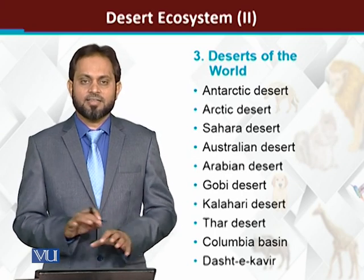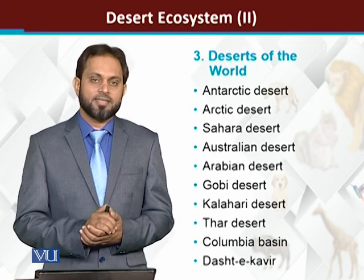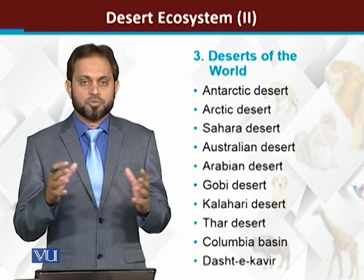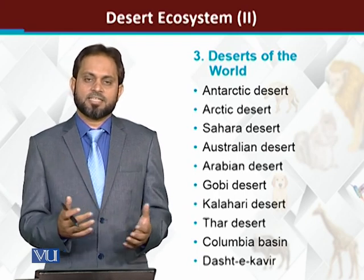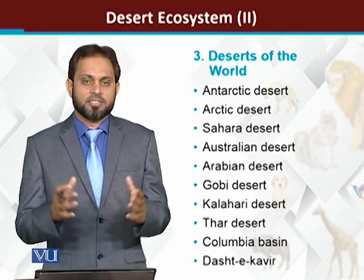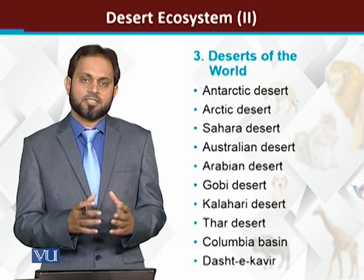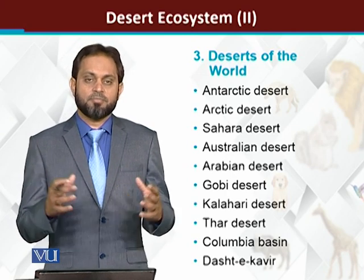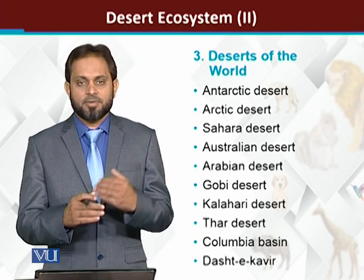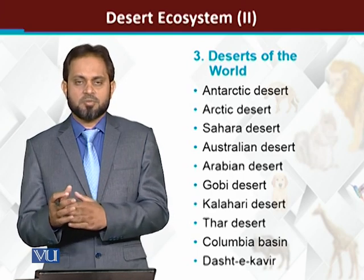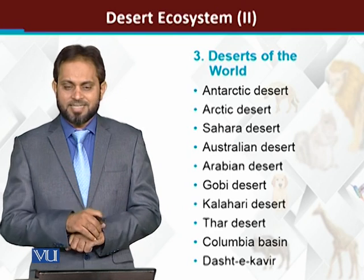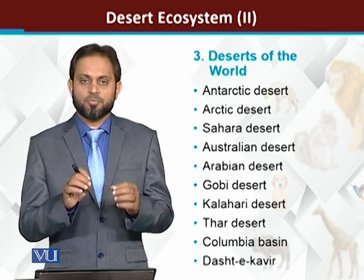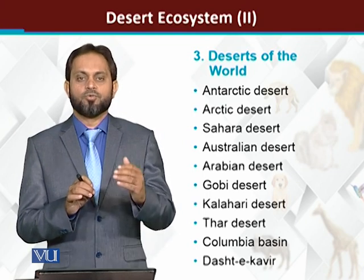Deserts are present on all continents. Desert-like biomes are increasing day by day because droughts convert grasslands and other ecosystems into deserts. An important desert ecosystem is the Antarctic desert — its annual precipitation as snowfall is less than twenty-five centimeters, which is why we call it a frozen desert.